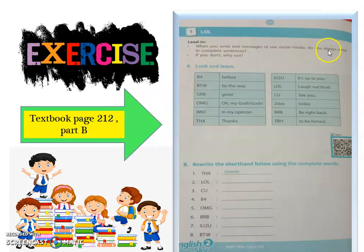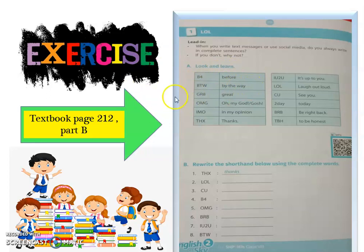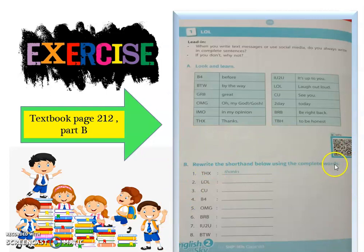When you write text messages for your social media, do you always write in a complete sentence? If you don't, why not? Look and learn. B4 — this is 'before.' Btw — 'by the way.' CR8 — 'great.' Okay, this is your exercise — ini jadi nilai. Rewrite the shorthand below using the complete words.